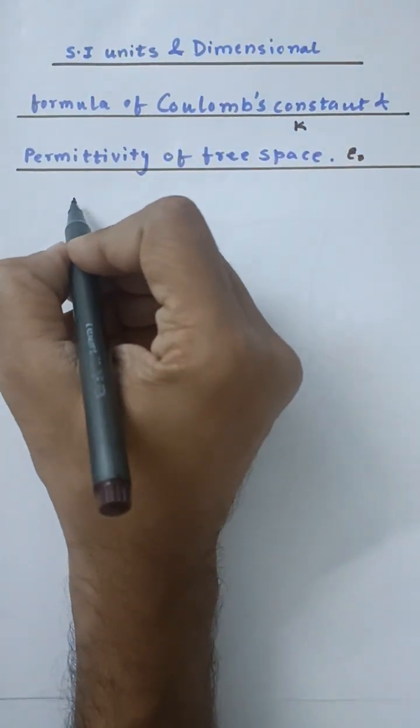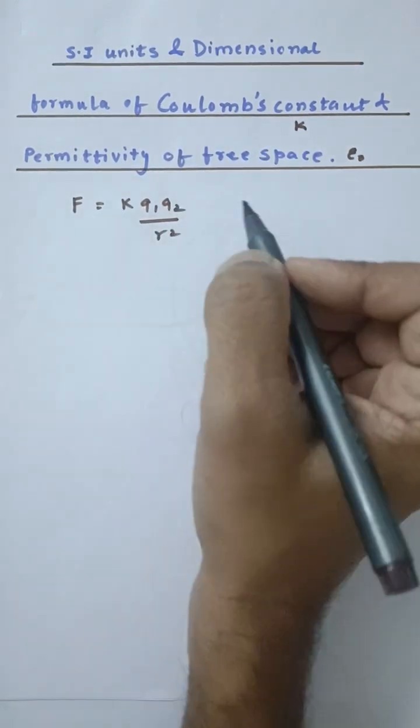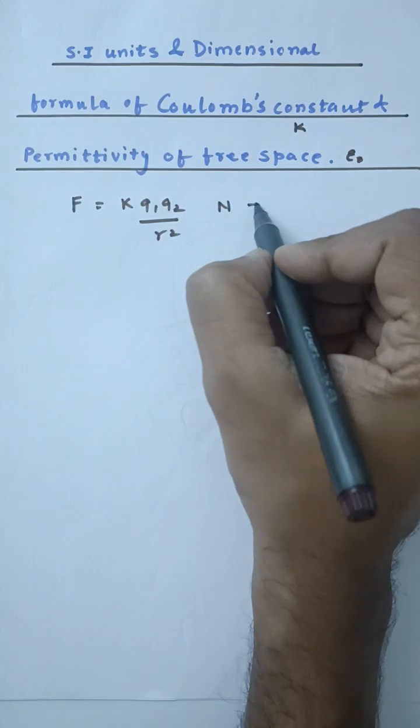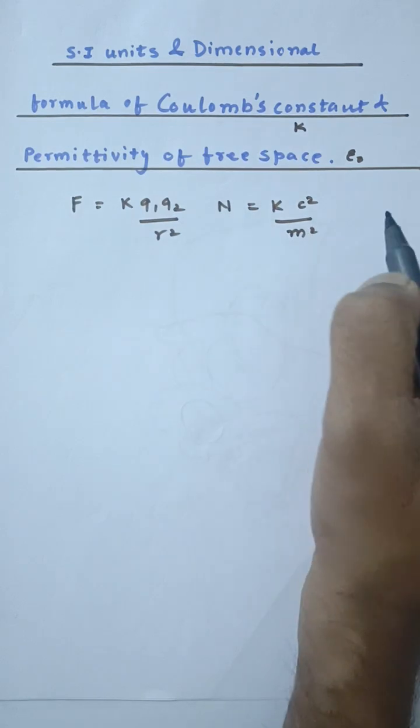We know that as per Coulomb's law, F = K Q₁Q₂/R². The SI unit of force is Newton. This is Coulomb and Coulomb, so this is Coulomb² upon meter².